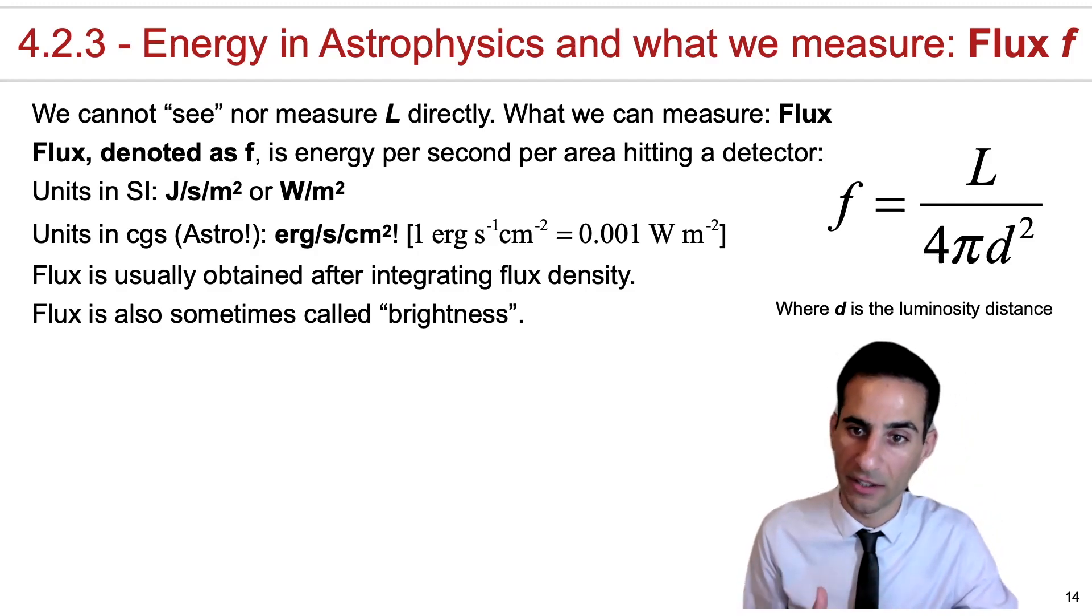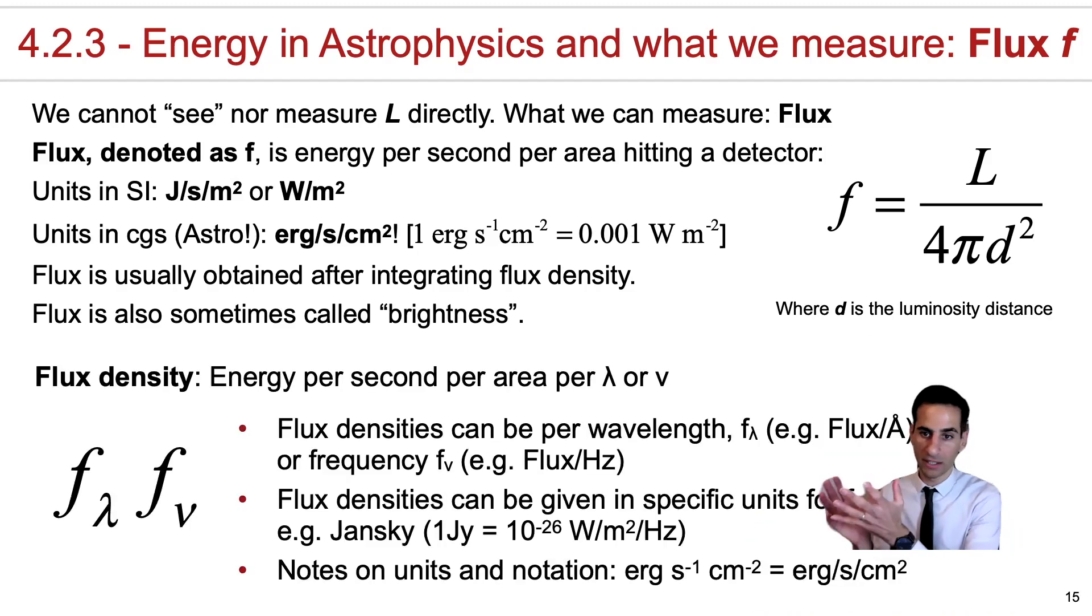Now finally, as you can see here on the side, flux density is a quantity that's defined as being energy per second per area—so that's a flux—when you divide it per wavelength or frequency. So these flux densities can be per wavelength, that they are typically denoted as f lambda, or they can be given in terms of frequency, and you can see here in terms of f nu with different units.